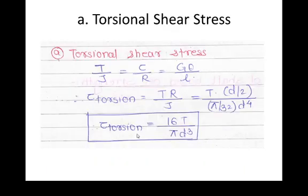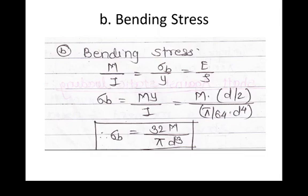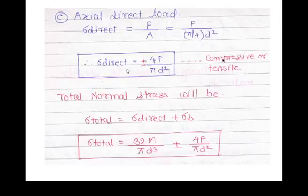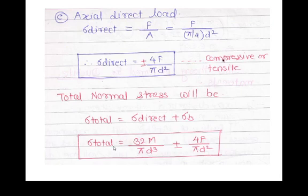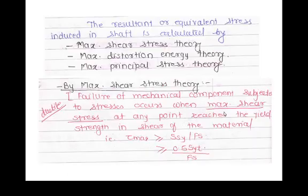We now have three stresses: τ_torsion, σ_B, and σ_direct. Since σ_B and σ_direct belong to the same family (both normal stresses), they can be combined directly: σ_total = σ_direct ± σ_B = 32M/πD³ ± 4F/πD². However, σ_total and τ_torsion fall in different families and cannot be added directly — we require an external agency called the theory of failure.